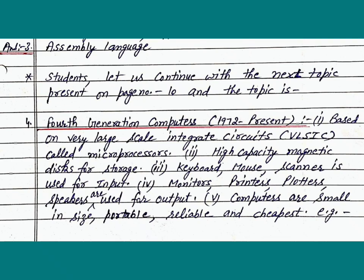Students, let us continue with the next topic present on page number 10. The topic is 4th generation computers from 1972 to present. Point 1: Based on very large scale integrated circuits, called microprocessors. Point 2: High capacity magnetic disk for storage. Point 3: Keyboard, mouse, and scanner are used for input. Point 4: Monitors, printers, plotters, and speakers are used for output.